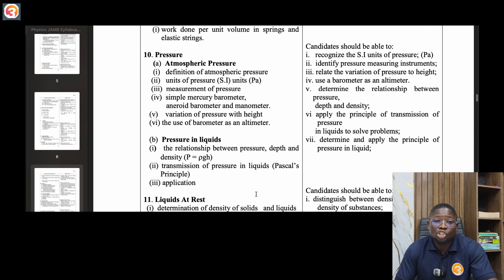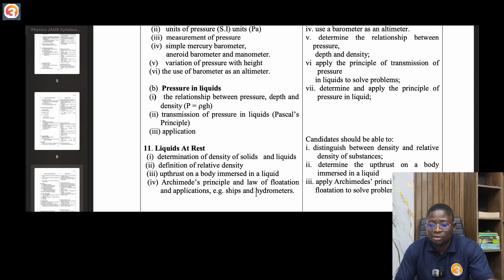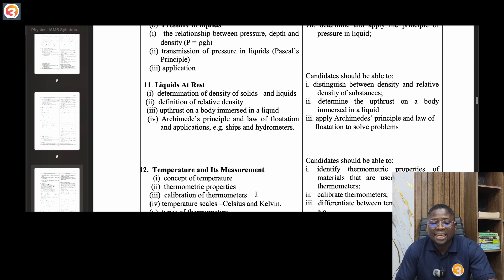Ten, pressure. Force per area, atmospheric pressure, determination of atmospheric pressure, units of pressure, measurement of pressure, simple mercury barometer, aneroid barometer and manometer, variation of pressure with height, use of barometer as an altimeter. Pressure in liquids, liquids at rest. Definition of density of solids and liquids, definition of relative density, upthrust on the body, mass in the liquid, Archimedes principle.